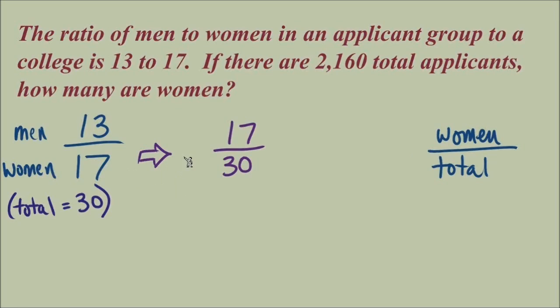Now I can write a ratio that does compare women to total applicants. In this small group, we did a quick addition to find out a total of 30. 17 we know are women. So to set up this ratio of women to total now means 17 over 30. And now we can match this up in a proportion with x over 2,160.